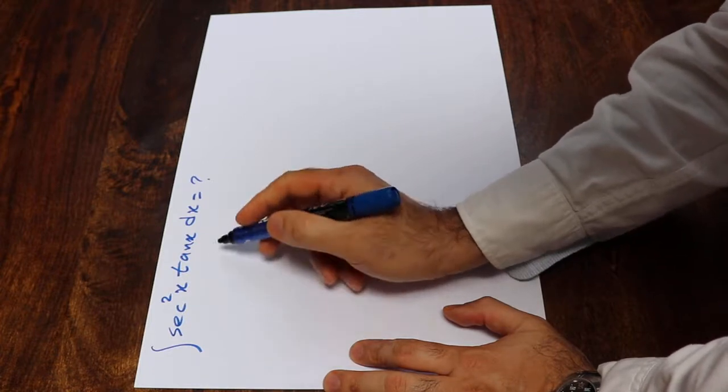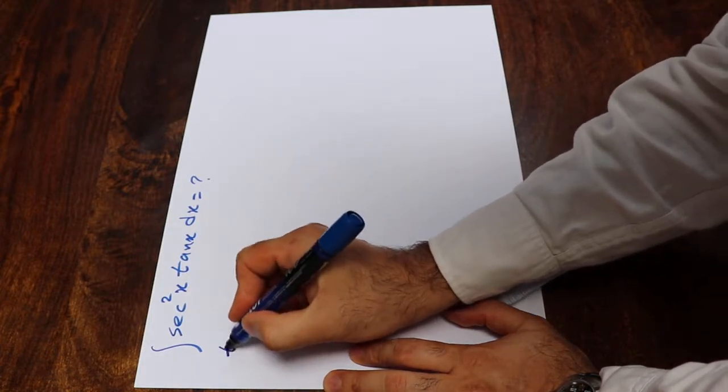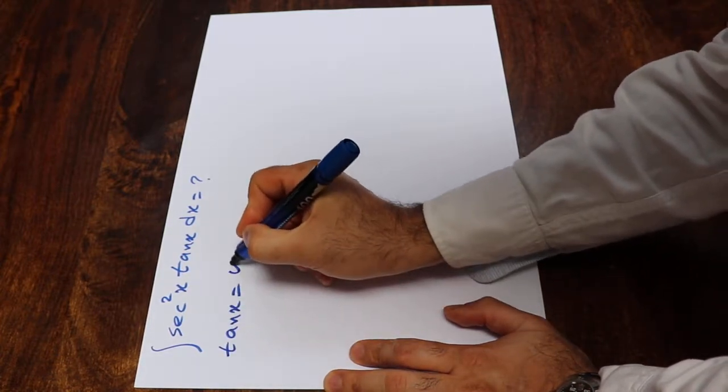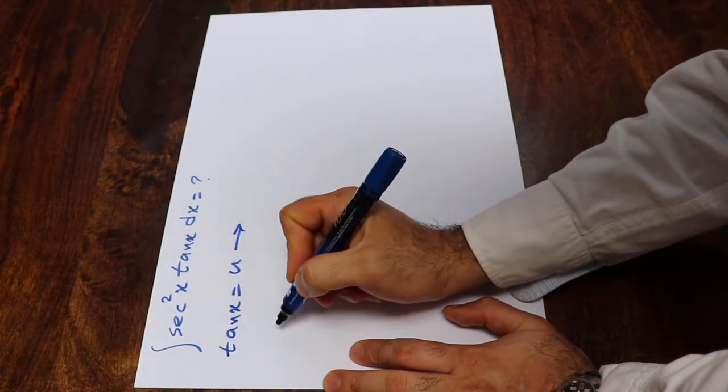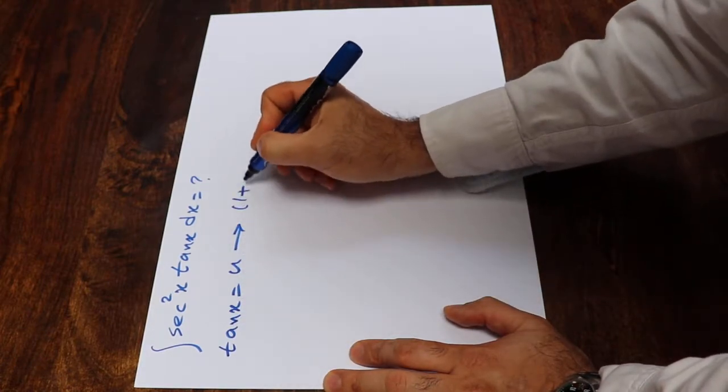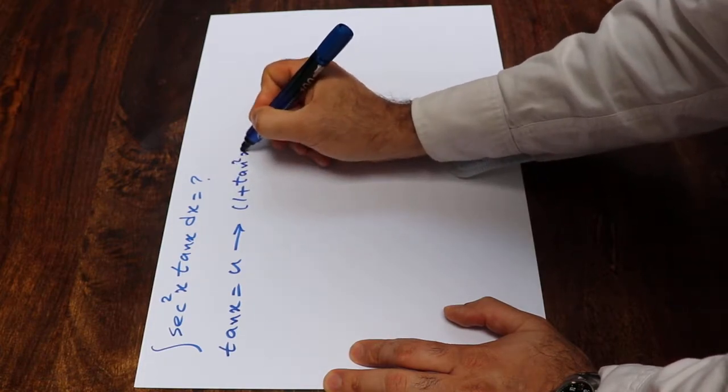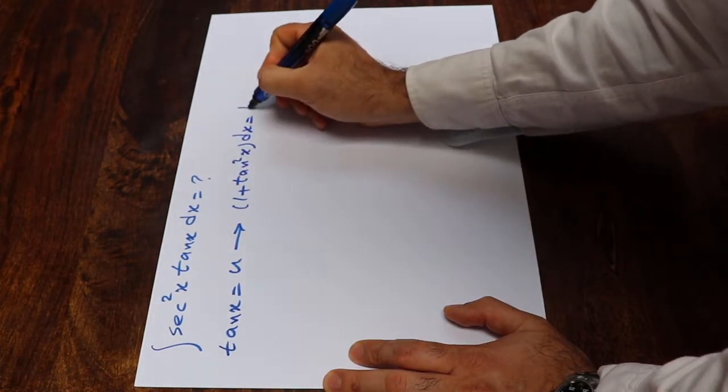You can solve this integral using the substitution rule. If you define tangent x as u, and if you take the derivative from each side of the equation, the derivative of tangent x will be equal to 1 plus tangent squared x, so dx will be equal to du.